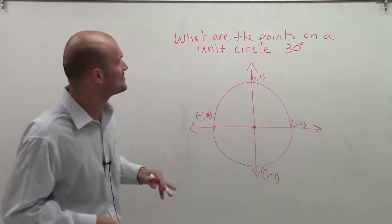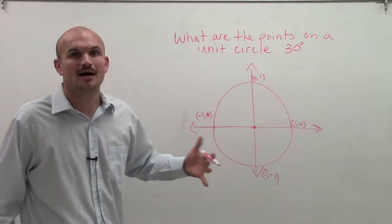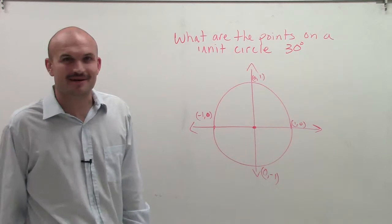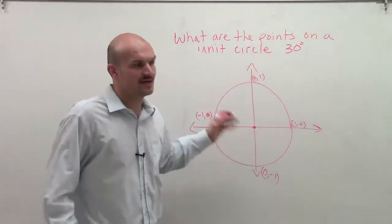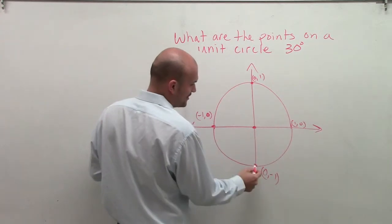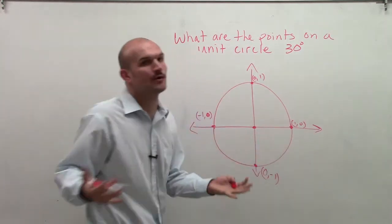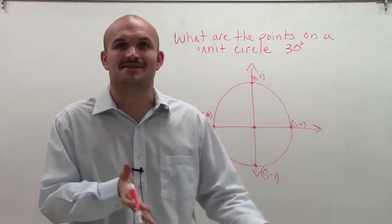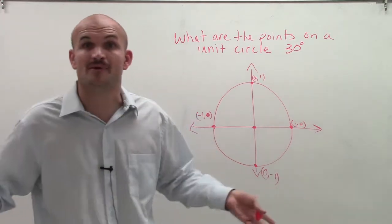OK, so what we have is, what are the points on the unit circle at 30 degrees? Well, that doesn't really make sense. But right now, we've talked about four important points on the unit circle, and those are the x and y intercepts. They're pretty easy to understand, because we knew that one coordinate had to be 0. And since the radius was 1, the other coordinate was either going to be 1 or negative 1.